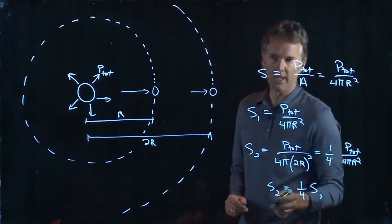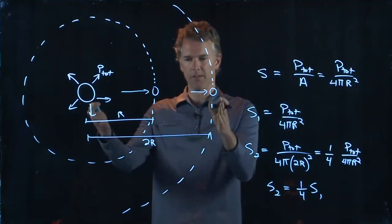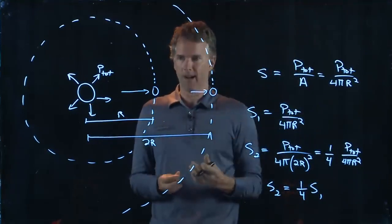So S2 is a quarter of S1. Double the distance, it goes down by a factor of 4.